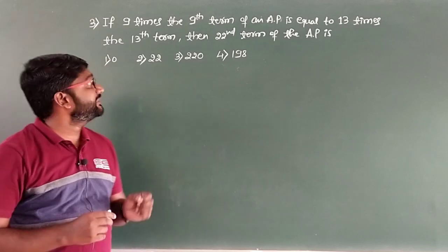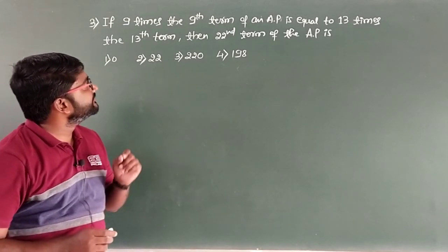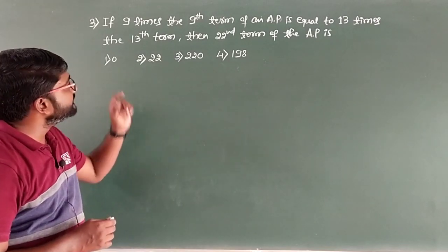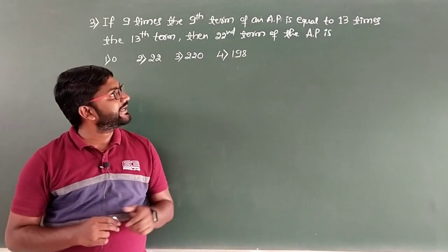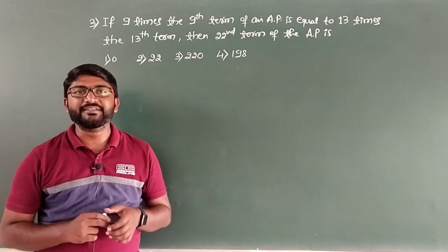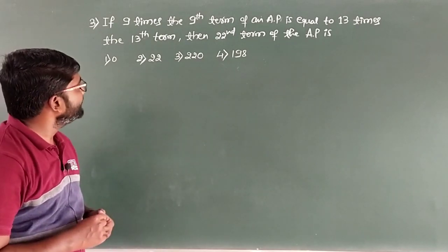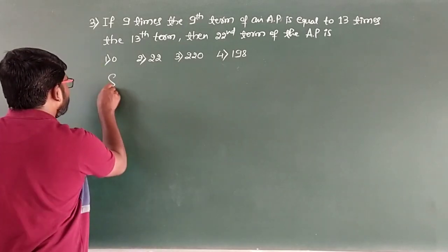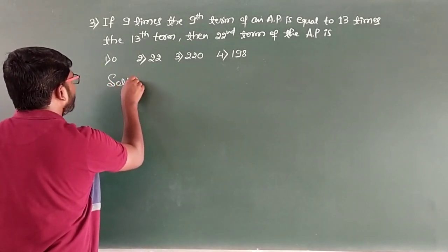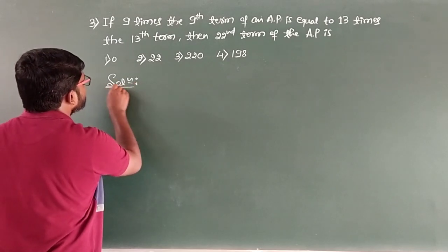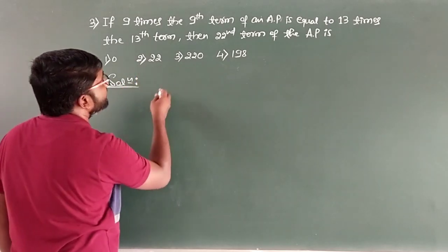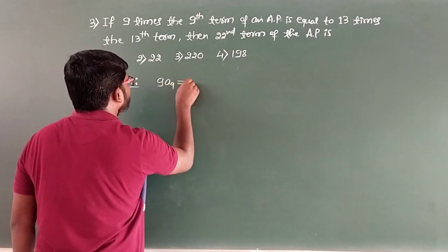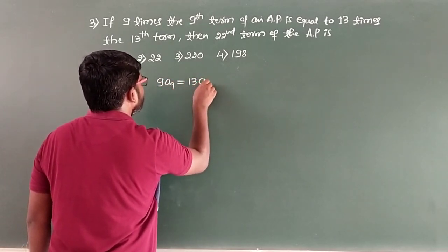The third question: if 9 times the 9th term of an AP equals 13 times the 13th term, then the 22nd term of the AP is — with options 0, 220, 22, and 198. The given condition is 9 × A9 = 13 × A13.